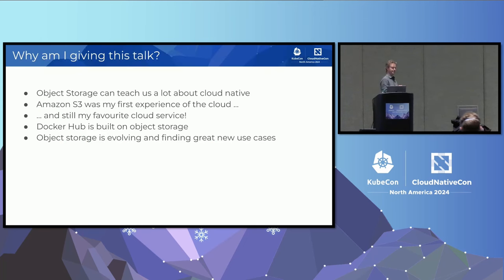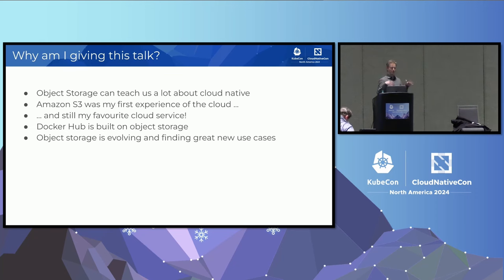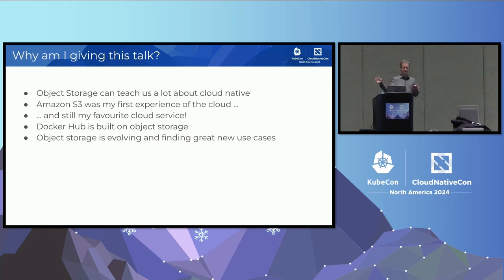I'm Justin Cormack, CTO at Docker. I've been working at Docker for a long time. We use a lot of object storage at Docker — we have this thing called Docker Hub and it uses a very large amount of object storage, so it's something we care about. But I also think there are a lot of other lessons from object storage. It can teach us a lot about what cloud native infrastructure looks like.